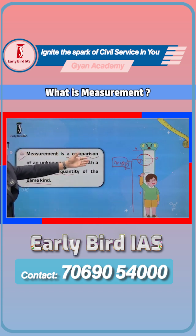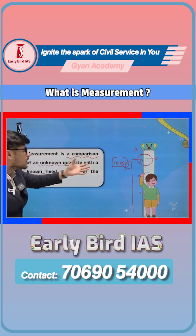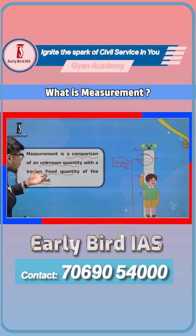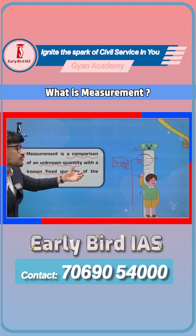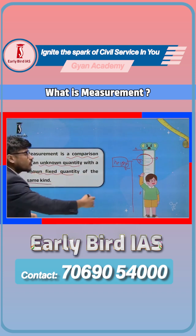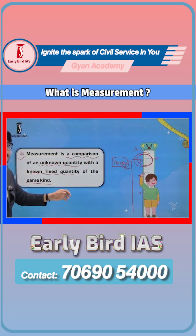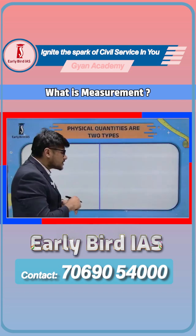Measurement is a comparison. What am I comparing? Comparing the known quantity with an unknown fixed quantity. That's called measurement. It's a very simple thing.